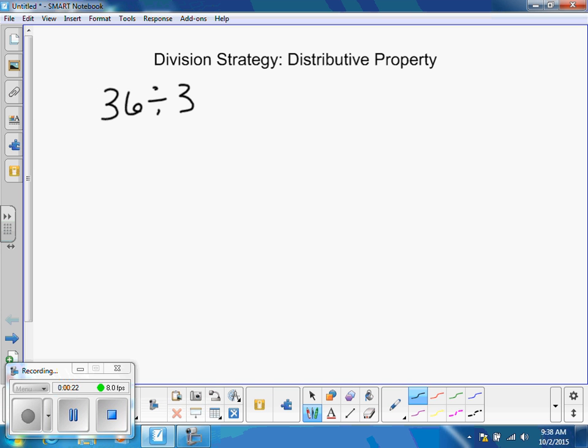To use this strategy, I'm going to look at our dividend and think about our divisor. Our dividend is 36, 3 is our divisor. We want to think about numbers that we could pull out or decompose from the 36 that are easily divisible by 3. If I look at 36, I know that I could decompose it into 30 and 6. I have fairly easy mental math problems. Now I'm going to divide each of those.